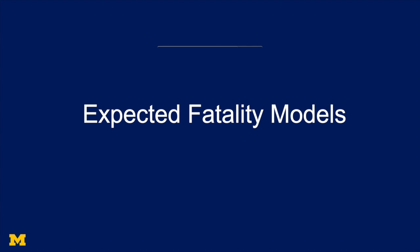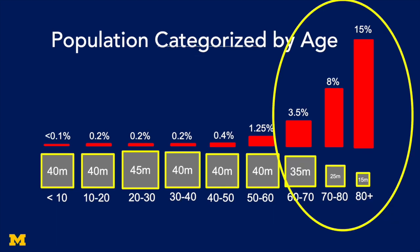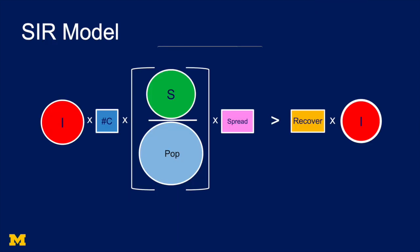So in a previous video, I talked about expected fatality models. And we saw in that video that as you get older, you're much more likely to suffer fatality. And from that, one of the things we learned, that it's incredibly important to make sure that older people don't get the disease. Well, let's think about what the SIR model tells us. It's somewhat complicated, so we want to simplify it.